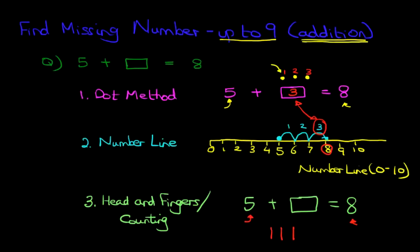How many fingers are we holding out? Well, let's count them. You're holding out one, two, three fingers. And that is our answer, 3.